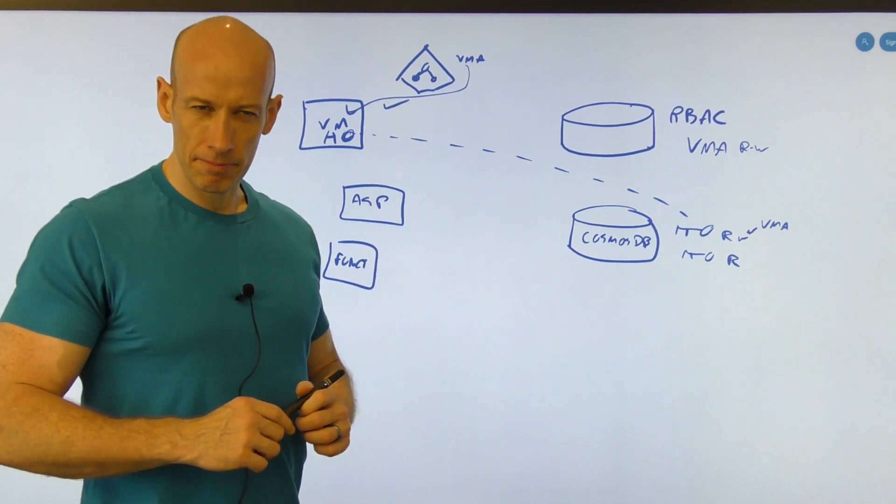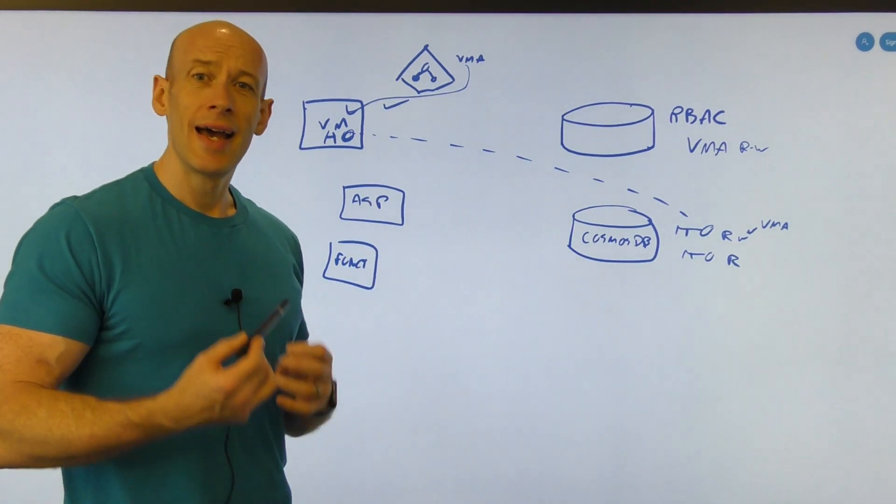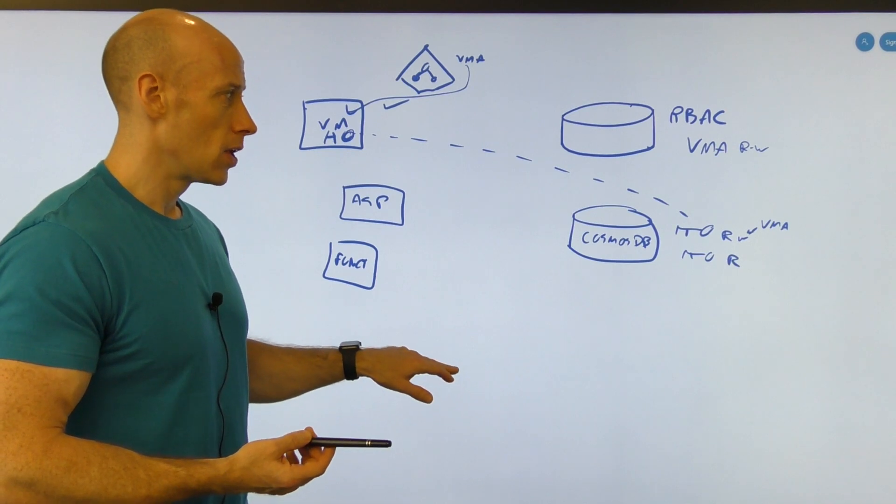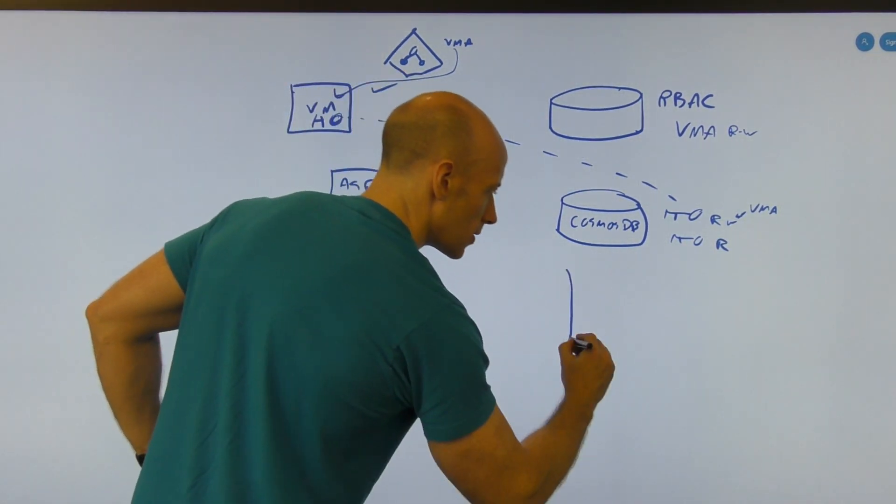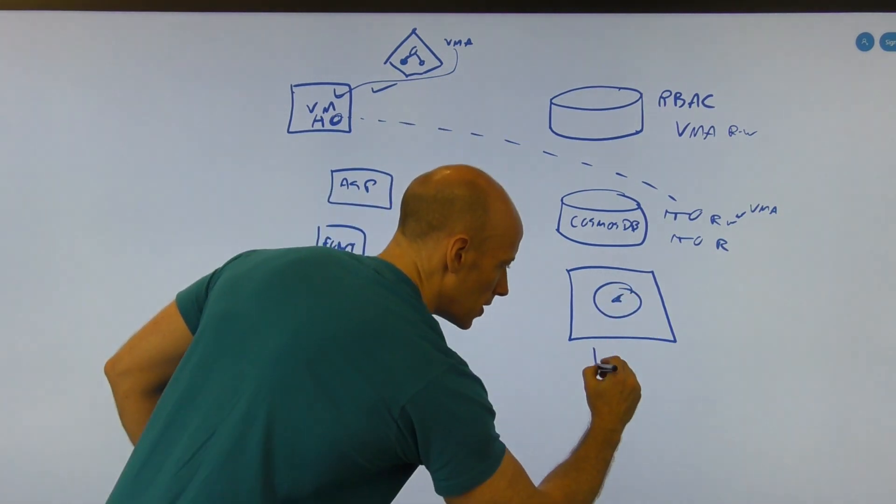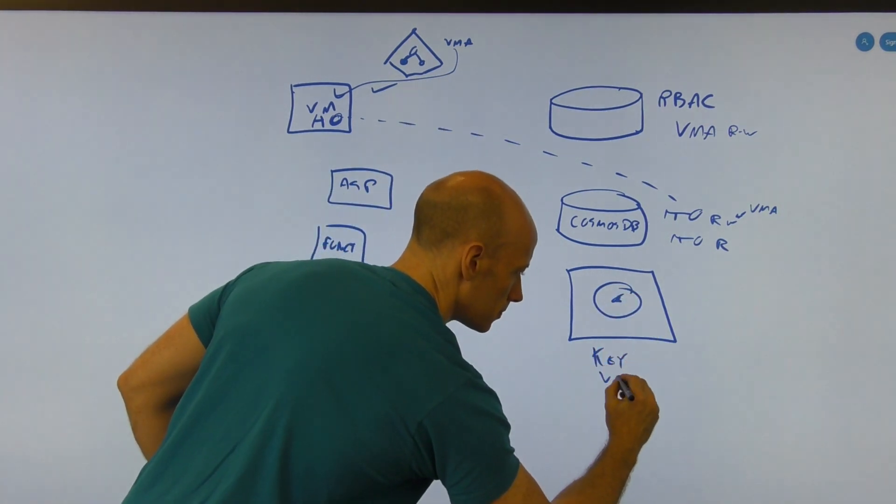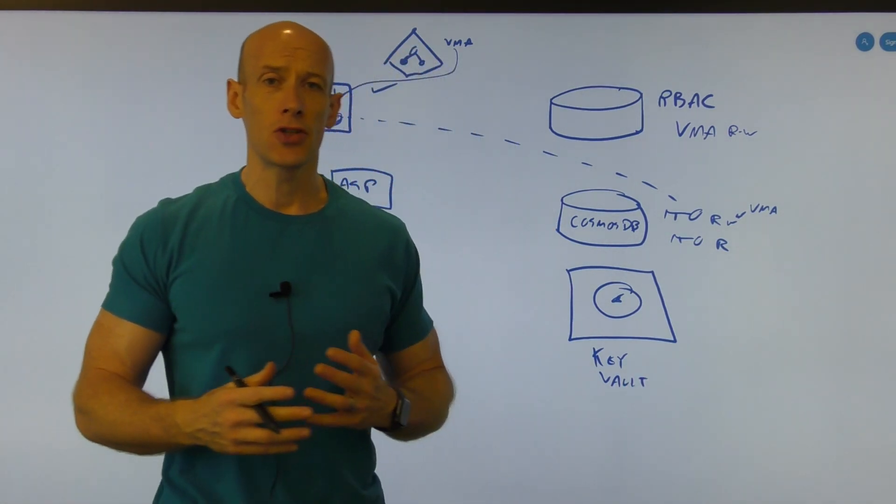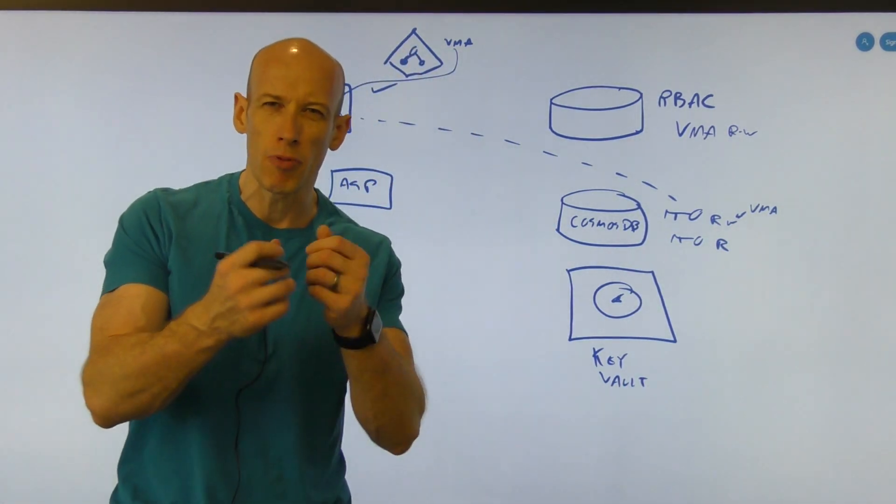But what if I can't do that? What if that's not an option? What if I have to have a secret? So at that point, that is where we have a service. I can't really draw a vault, but this is Key Vault.